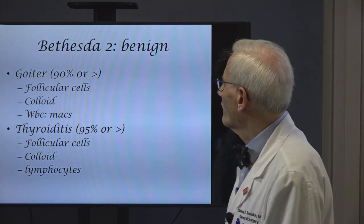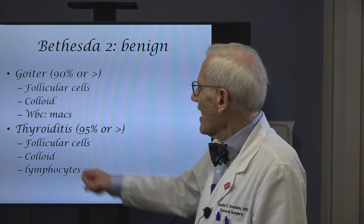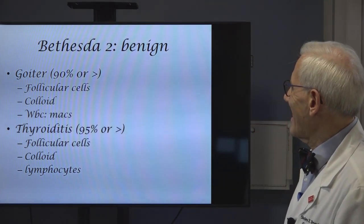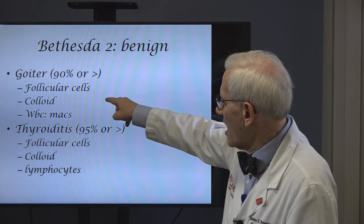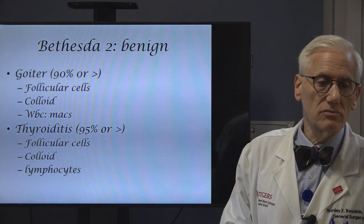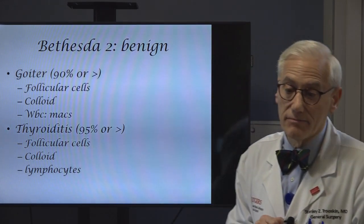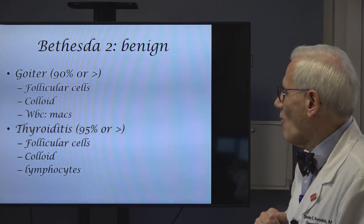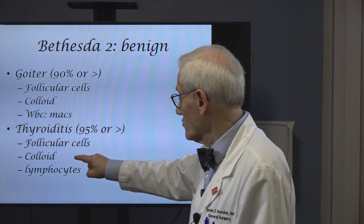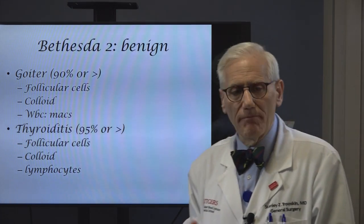Bethesda 2 means it's benign. There are two benign diagnoses — goiter and thyroiditis. For a pathologist to say it's benign, they have to see follicular cells, colloid, and a certain type of white blood cell. If they see all three of those, they're going to say it's benign, and greater than 95% of the time they're going to be correct. It's not 100% because of sampling error. For thyroiditis, they're going to see follicular cells, colloid, and lymphocytes. What do we do with one benign biopsy? We tell the patient good news, it's benign on this biopsy. We want to see you in three months.